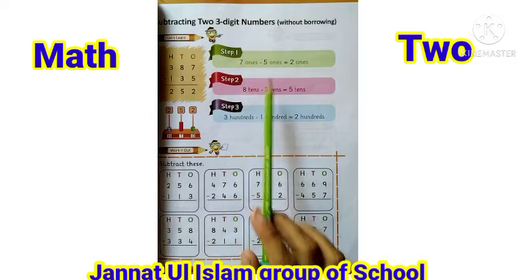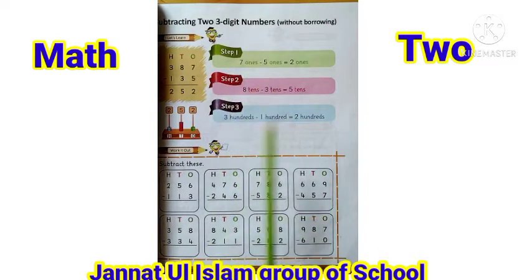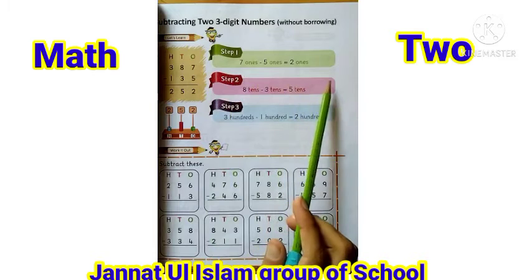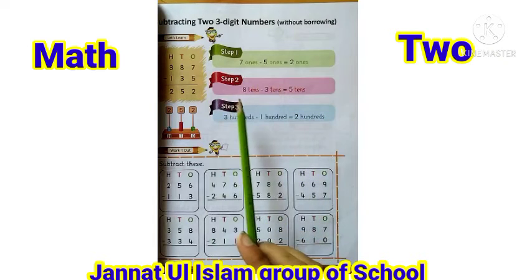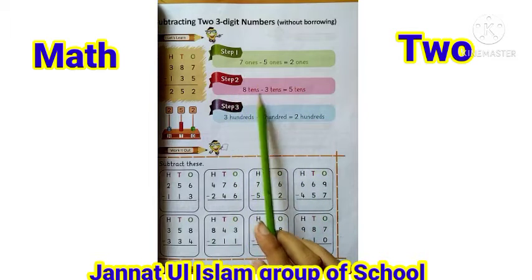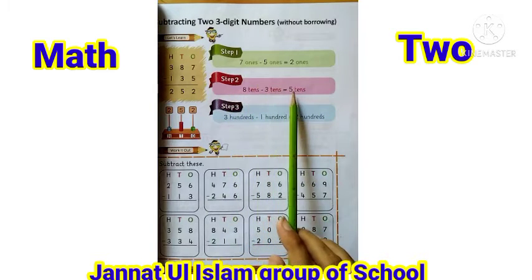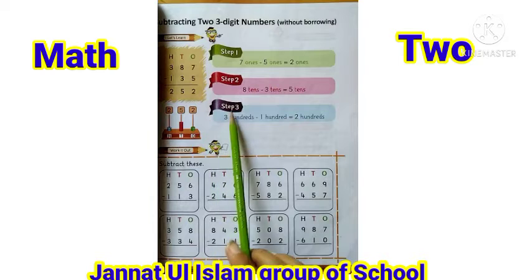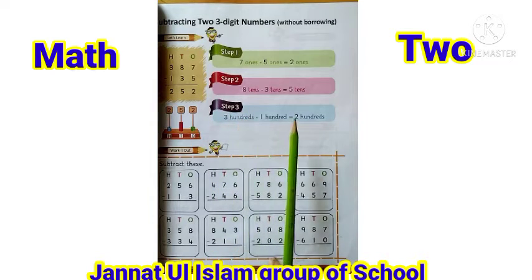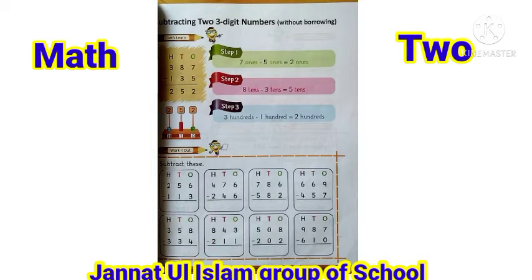سب سے پہلا step یہ ہوگا کہ ones میں سے ones والوں کو ہم minus کریں گے۔ Step two میں tens میں سے tens والوں کو minus کریں گے۔ اور step three میں hundreds والوں میں سے hundreds والوں کو minus کریں گے۔ تو اب ہم اپنے first question کی طرف آتے ہیں۔